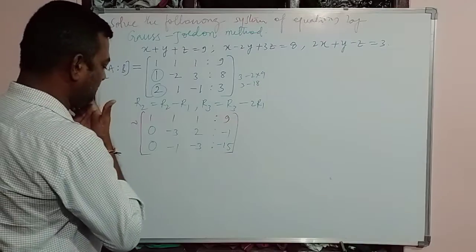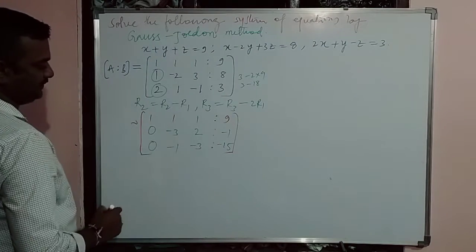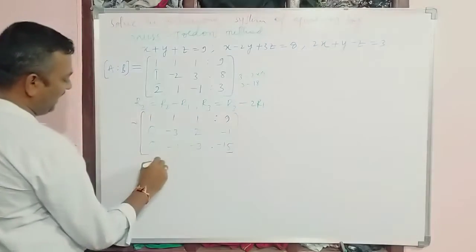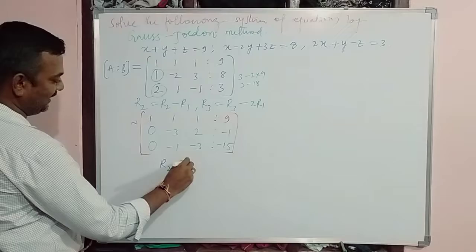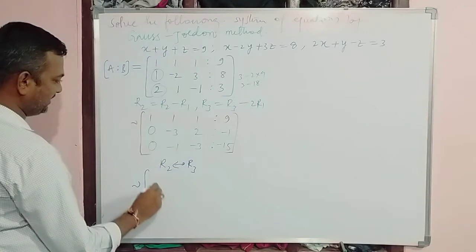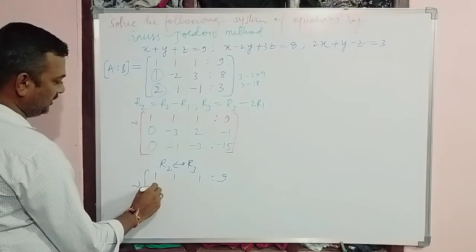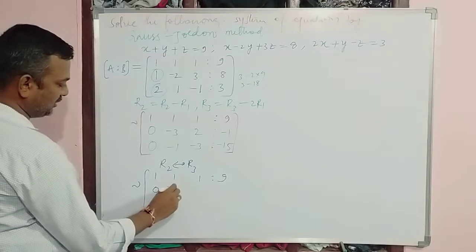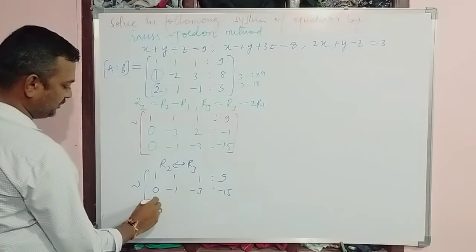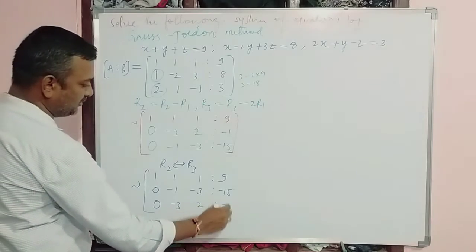Now I am going to interchange rows R2 and R3 — you will come to know why. After the interchange the matrix becomes: Row 1: 1, 1, 1 | 9; Row 2: 0, -1, -3 | -15; Row 3: 0, -3, 2 | -1.